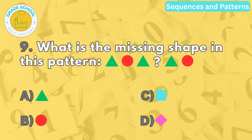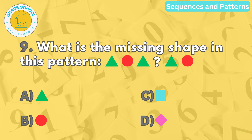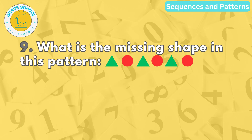Question number nine. What is the missing shape in this pattern? The correct answer is letter B. Circle. The pattern repeats the same two shapes: triangle, circle, triangle, circle, and so on.